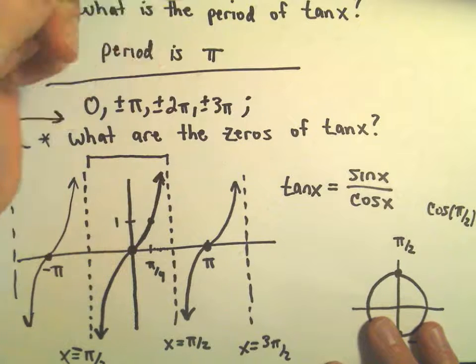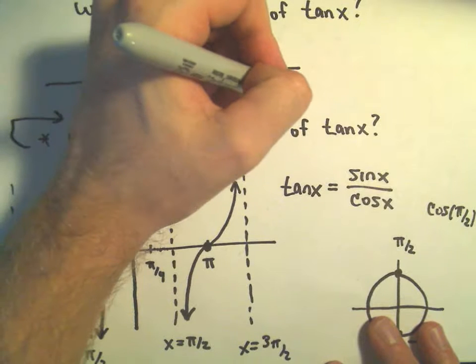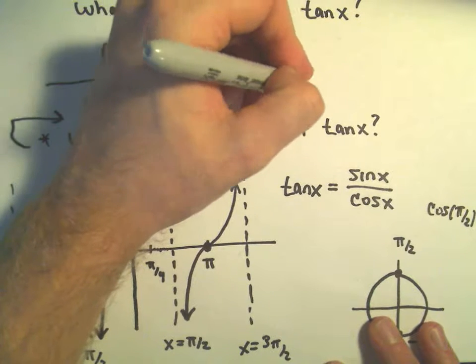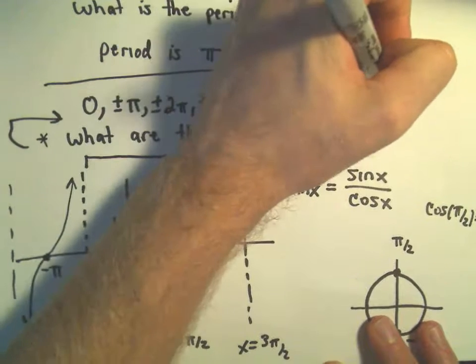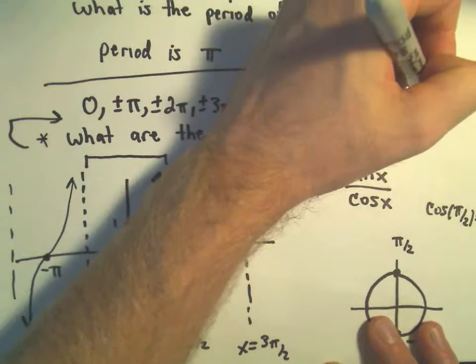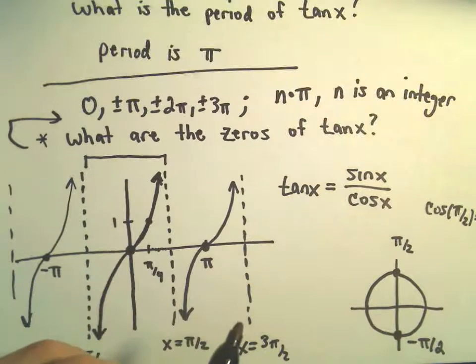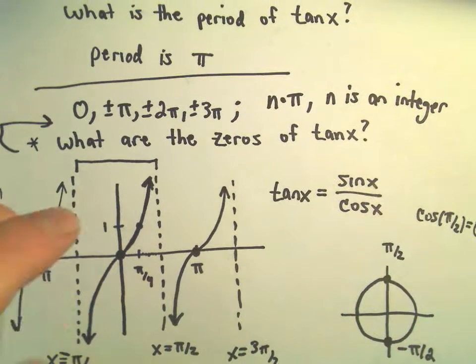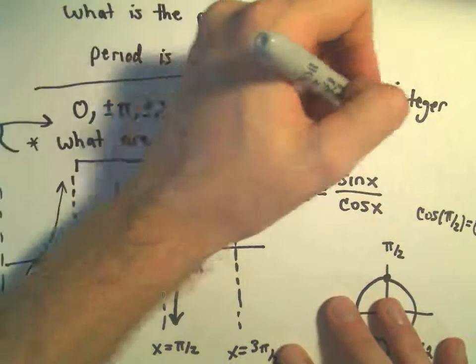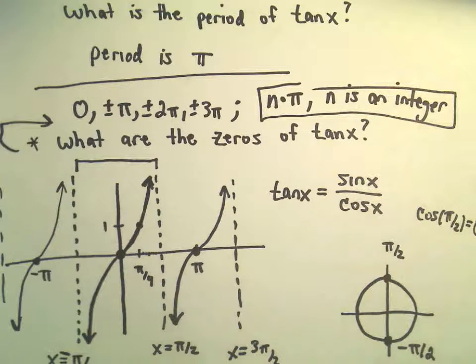The way we'll write that is to say the zeros are at n times π, where n is an integer. Remember, integers are 0, plus or minus 1, plus or minus 2, plus or minus 3, etc. That would be a formula for the zeros of our tangent function.